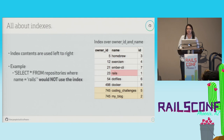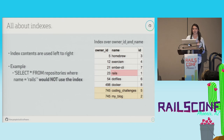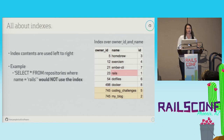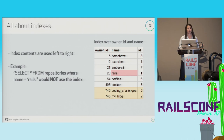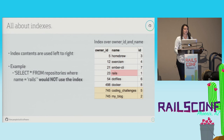A few more things about indexes: index contents are used left to right. Indexes are sorted based on the leftmost column; however, if you have duplicate values in that column, it will sort those records based on the next column in the index. So we have two repositories with an owner ID of 745 — those are ordered based on the name since name is also included in our index. If we had a query where we wanted repositories where the name is Rails, name is not the leftmost column in our index, so the index isn't sorted based on name, and we actually couldn't use the index to resolve that query.